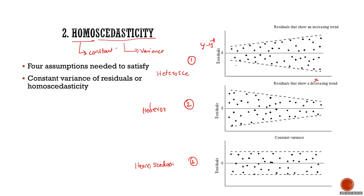Variance is the degree of spread or degree of randomness in the data. For example, if you look at the residuals in the initial stages, the spread is small, but as you keep increasing your X value, the variance is increasing. As X increases, the variance in the error is increasing. That means there is some increasing pattern which is not being captured by linear regression. That's why we don't apply linear regression if the variance is increasing or decreasing.